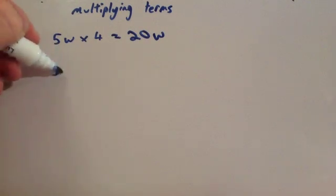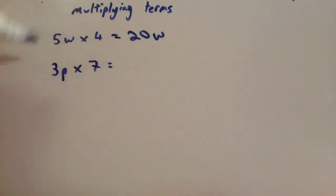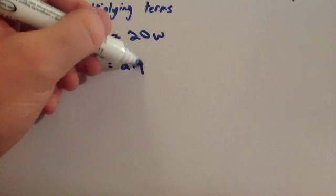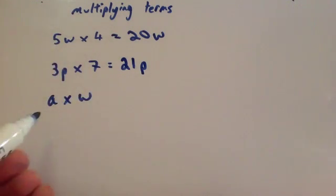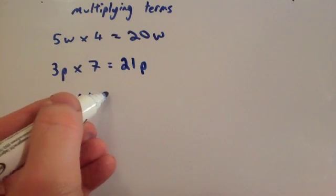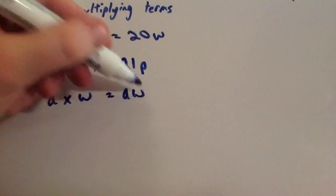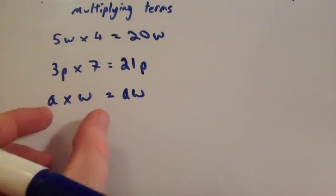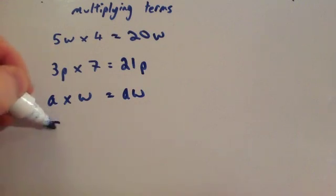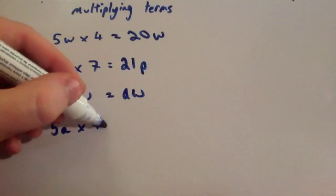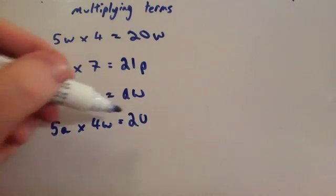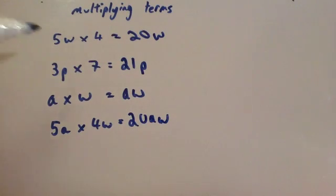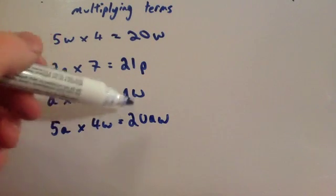If you had something like 3p times 7, again you'd multiply the numbers together, so 3 times 7 is 21p. And if you had 5a times 4w, you'd multiply the numbers together — 5 times 4 is 20 — and then a times w is aw, so the answer is 20aw. The key thing is you multiply the numbers together and the letters together.